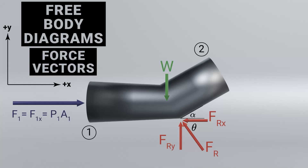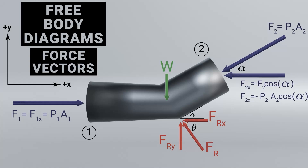Now we denote the pressure force at location one. Since we're dealing with pressurized flow in a pipe, there will be some pressure at that location, producing a force F1, which equals the pressure at one times the cross-sectional area at location one. Lastly, we denote the force at point two from the pressure at point two. This produces a resultant force F2 acting at angle alpha. We break this into components: F2x and F2y, where F2y equals the pressure P2 times the cross-sectional area at two times sine of alpha.